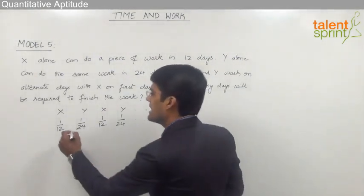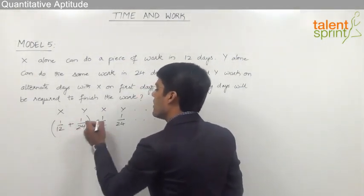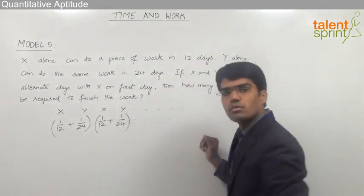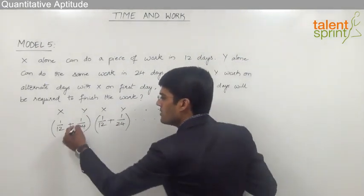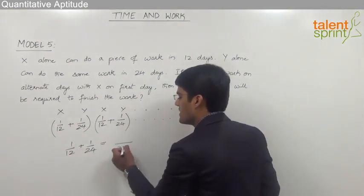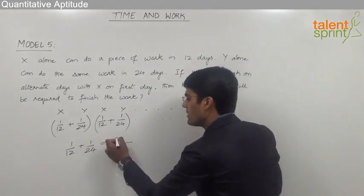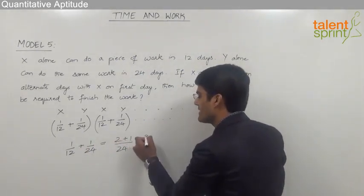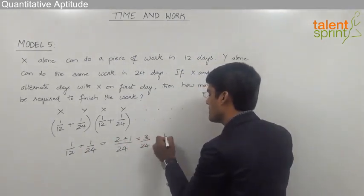So let us now understand how much work gets over on every pair of two days. Now on the first two days we can find that the work that is over is 1 by 12 plus 1 by 24. So if you take 24 as LCM here, 12 goes 2 times and 24 once. So this is 3 by 24 which is 1 by 8.